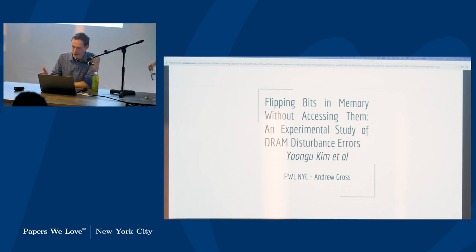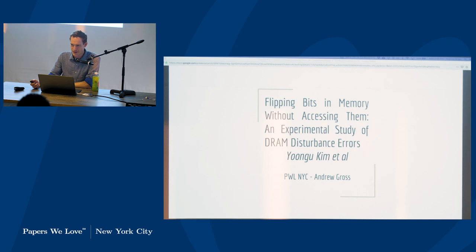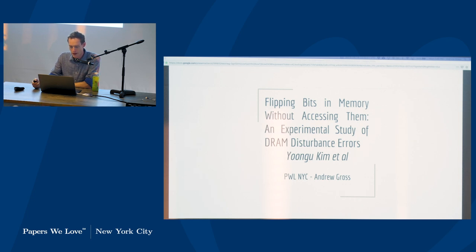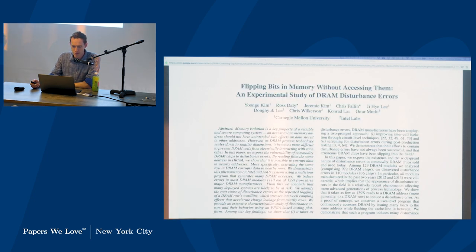Hello, everyone. My name is Andrew. I am also one of the organizers for Papers We Love, but I will be doing the first talk tonight. The name of this paper is "Flipping Bits in Memory Without Accessing Them." It kind of is a little bit understated as to what's going on. Most people here have probably heard about Rowhammer or at least heard something about it. This is the paper that Google wrote their blog post based off of. Part of the work was done at Carnegie Mellon and part with Intel Labs — working with a company in semiconductors is helpful.